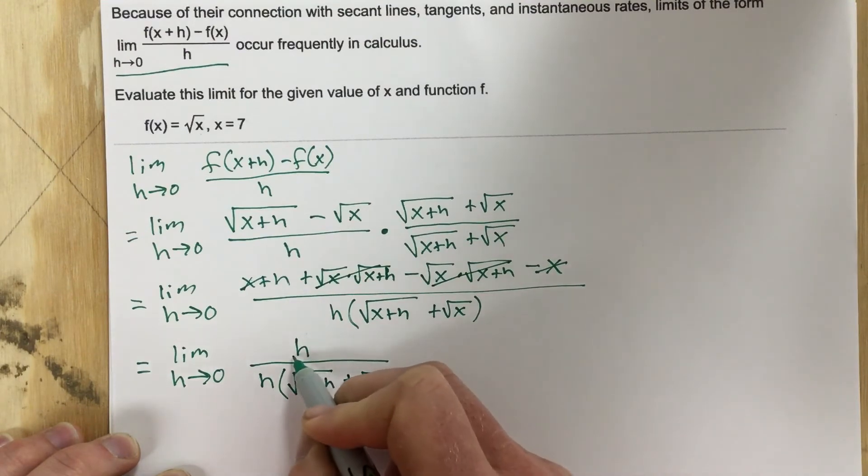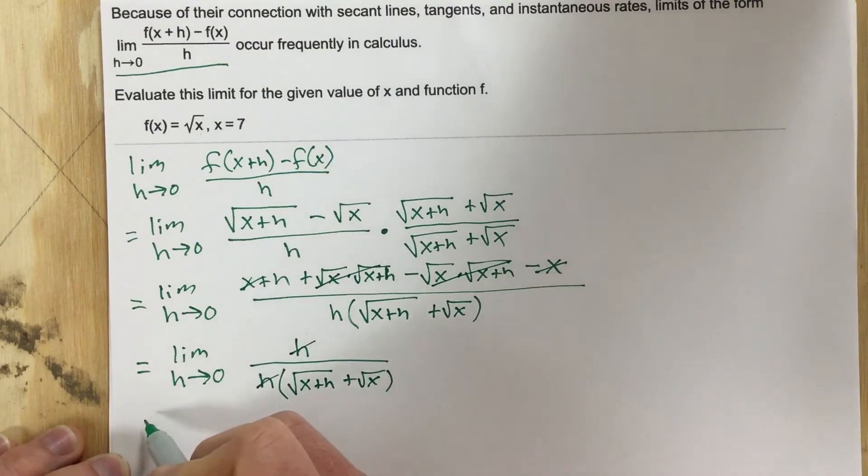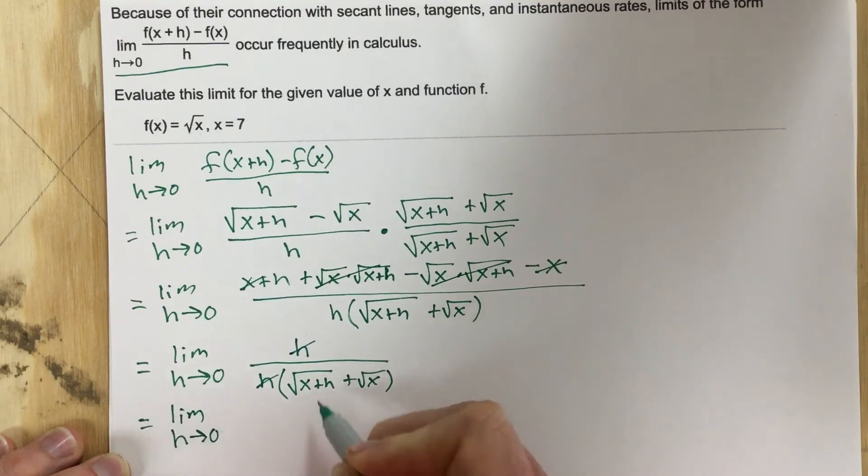Well, you can clearly see that the h's cancel. And so we end up with the limit as h approaches 0 of 1 over root x plus h plus root x.